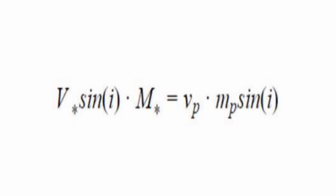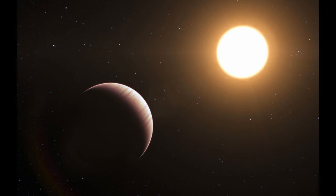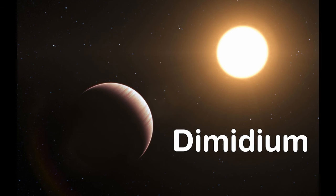The first extrasolar planet ever discovered was via the radial velocity method. The name of this exoplanet is called Dimidium. There were a few unconfirmed planet candidates before it. The first of which being discovered was by another method called pulsar timing. But Dimidium was the first to be confirmed.